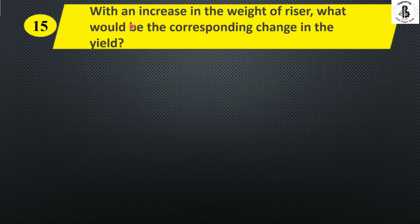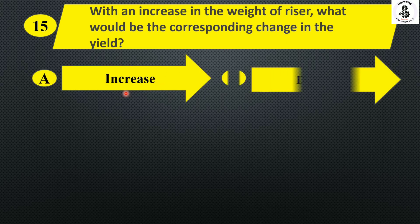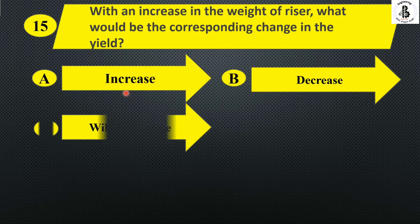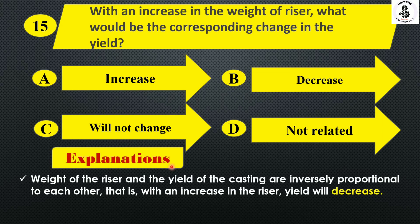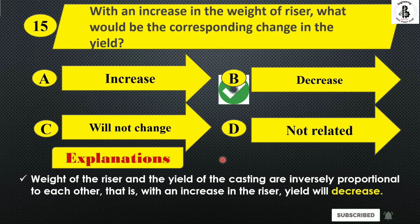Next: with an increase in the weight of the riser, what would be the corresponding change in yield? Option A increase, option B decrease, option C will not change, and option D not related. Basically, the weight of the riser and the yield of the casting are inversely proportional to each other. So with an increase in riser weight, the yield decreases. The right answer is option B.